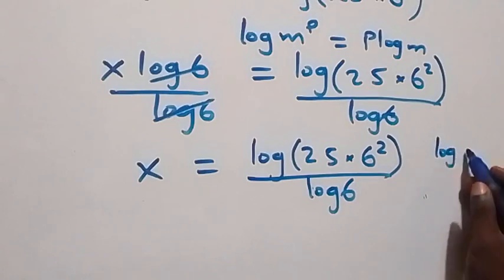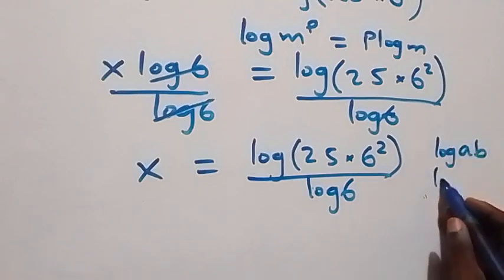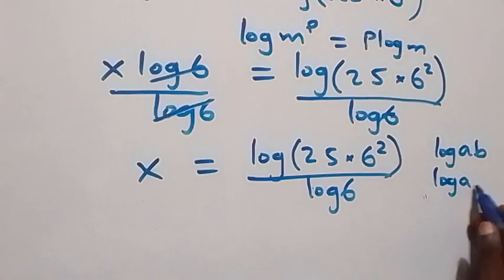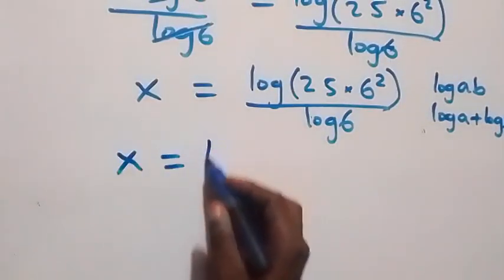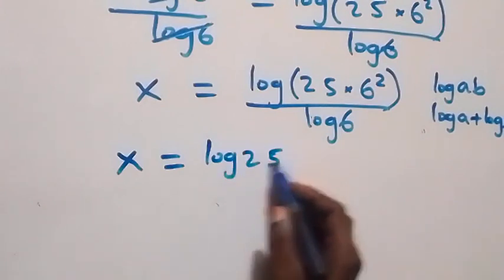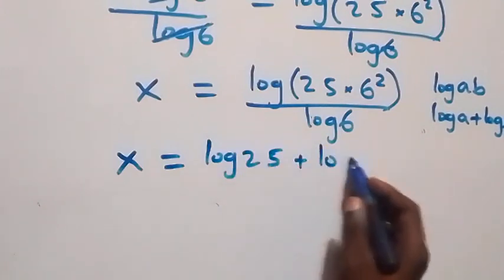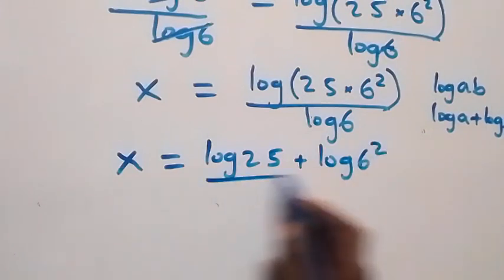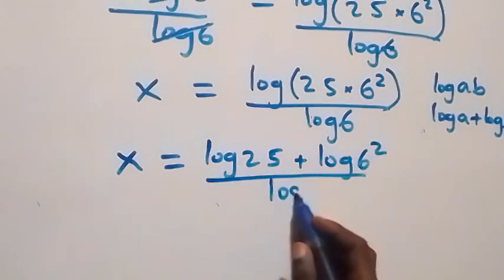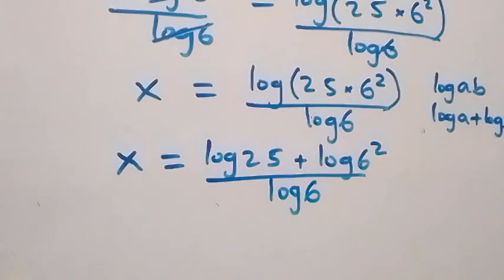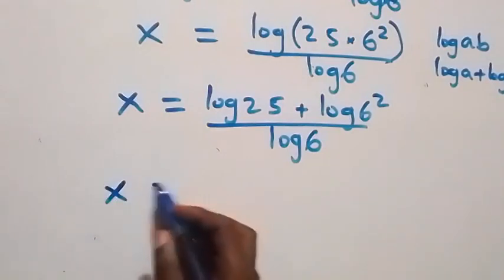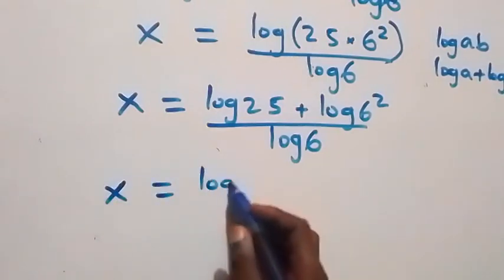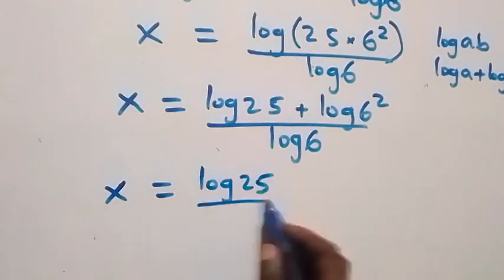We apply the log product rule: log(ab) equals log a plus log b. This gives x equals log 25 plus log 6 squared, all divided by log 6. We can separate this into two fractions: x equals log 25 over log 6 plus log 6 squared over log 6.